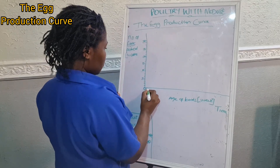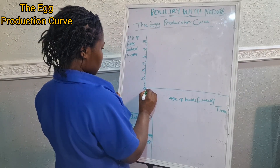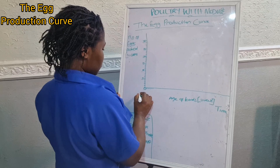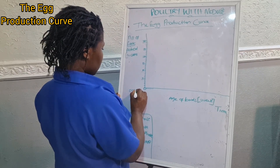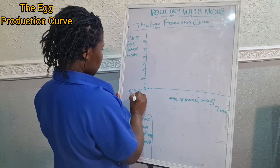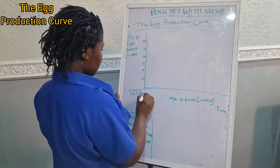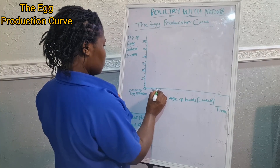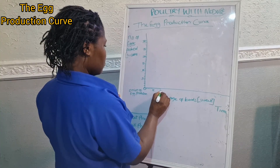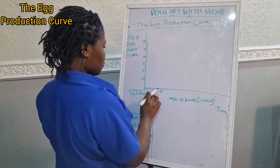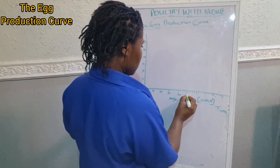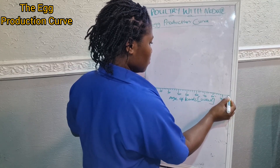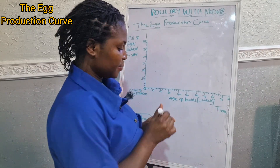As layer poultry farmers we have to understand the egg production curve because it is very vital for our success in poultry farming. By recognizing the different phases of the curve and the factors that affect them, farmers can optimize their production and make informed decisions. A well-managed egg production curve can lead to increased profitability and sustainability. Sustainability is what drives this business — it is what would make you want to stock the next set of birds — and this is why by all means we have to be informed about this production curve.